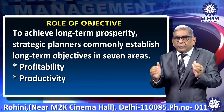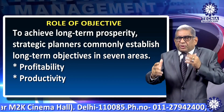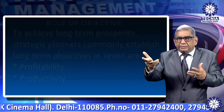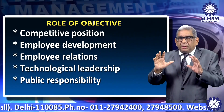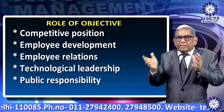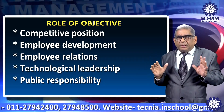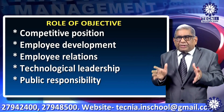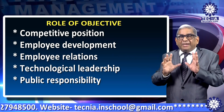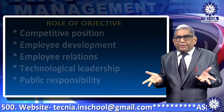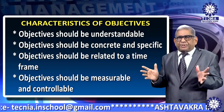Those seven areas are: profitability, productivity, competitive position, employee development, employee relations, technological leadership, and public responsibility. What are the characteristics of these objectives?